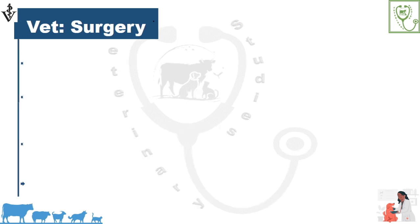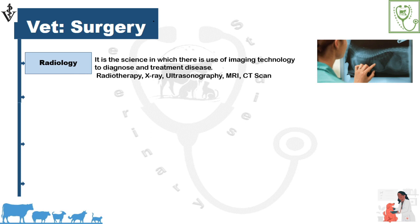Veterinary surgery is the branch of medicine that deals with treating injuries and diseases by surgical procedures. It includes radiology — a science which uses imaging technology for the diagnosis and treatment of diseases, including radiotherapy, X-ray, ultrasonography, magnetic resonance imaging (MRI), and computerized tomography (CT) scanning. X-ray, ultrasonography, MRI, and CT scanning are used for diagnostic purposes, whereas radiotherapy is used for the treatment of cancers or tumors.